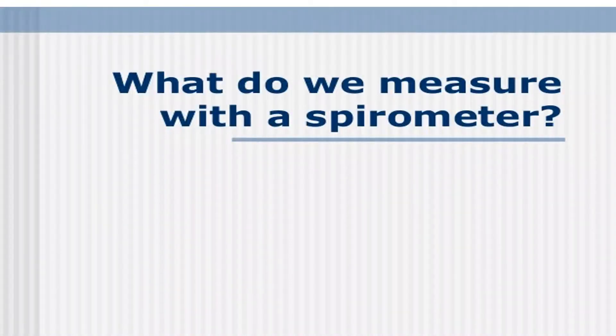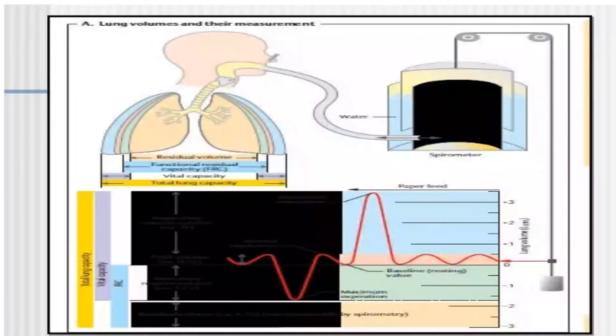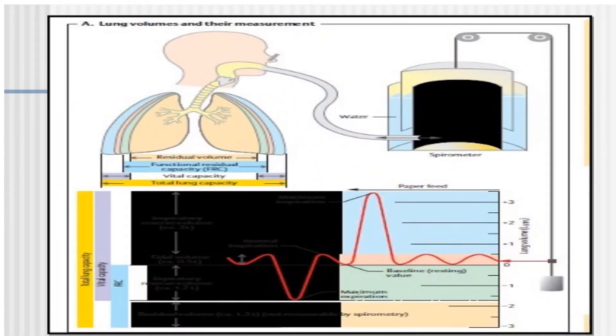What do we measure with a spirometer? With a spirometer, we can be able to measure the vital capacity. Vital capacity is nothing but the sum of tidal volume, inspiratory reserve volume, expiratory reserve volume.